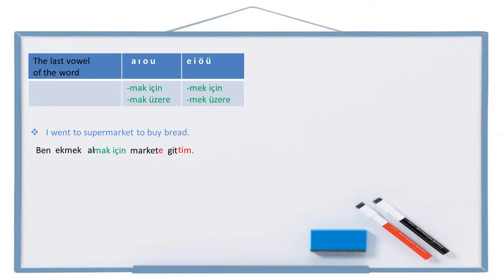I can write the same sentence like this too: Ben ekmek almak üzere markete gittim. Both of them are the same.